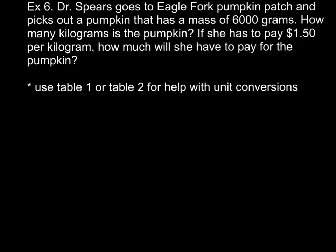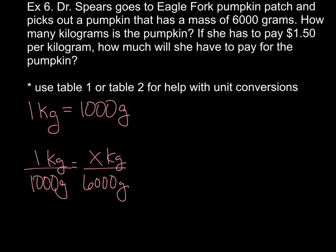All right, guys. So it's fall. So this problem is basically true. Dr. Spears goes to Eagle Fork Pumpkin Patch and picks out a pumpkin that has a mass of 6,000 grams. How many kilograms is the pumpkin? Then it asks, because of course, if you're going to a pumpkin patch and you're picking out a pumpkin, you got to pay for it. If she has to pay $1.50 per kilogram, how much will she have to pay for the pumpkin? So I put in here, use table 1 or table 2 for help with unit conversions. Okay, I went ahead and put the conversions there for you. So 1 kilogram equals 1,000 grams. And I put the proportion for you. 1 kilogram to 1,000 grams is equal to X amount of kilograms to 6,000 grams.